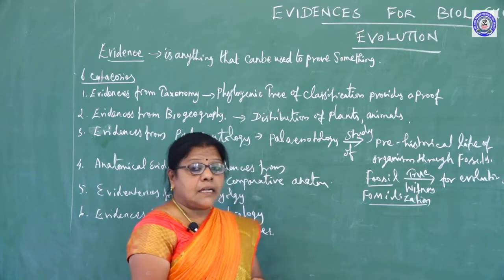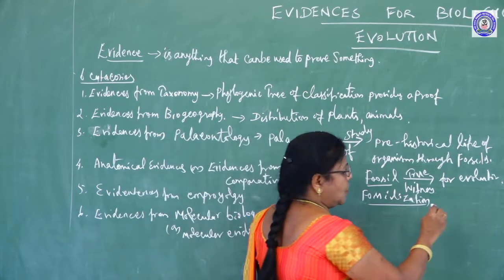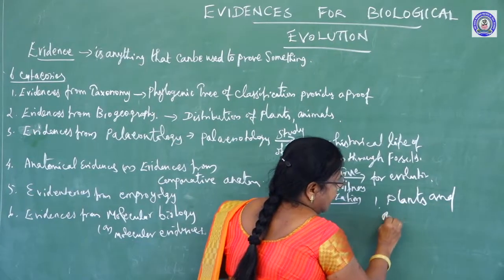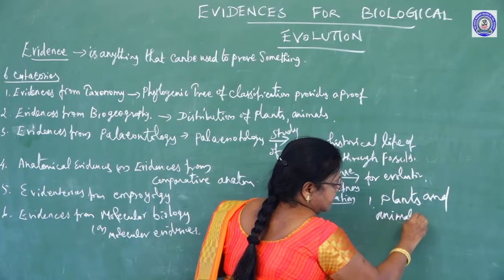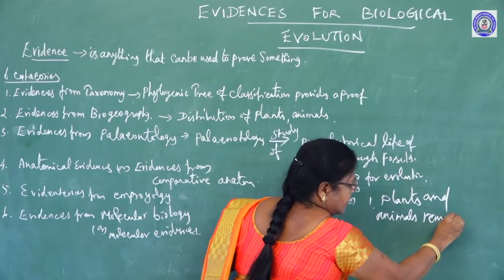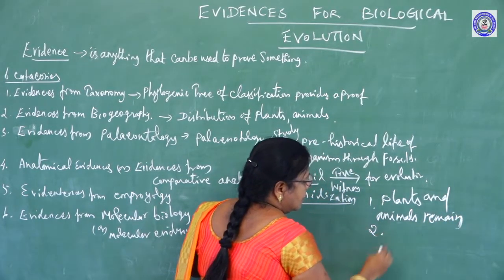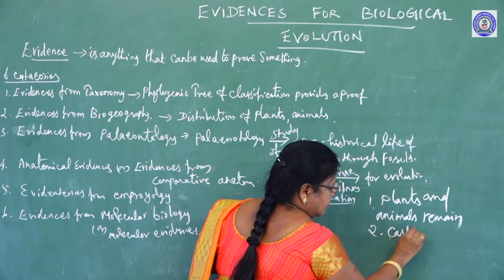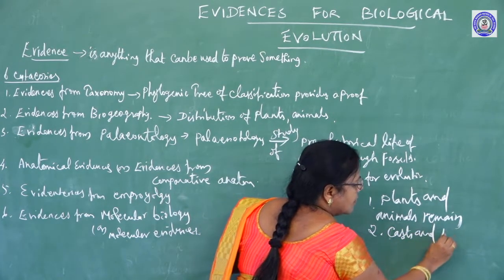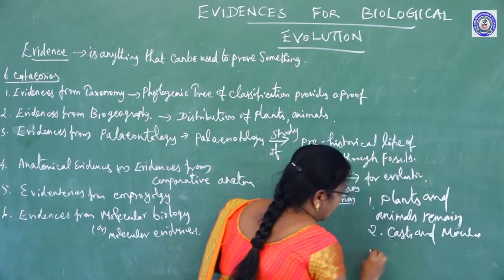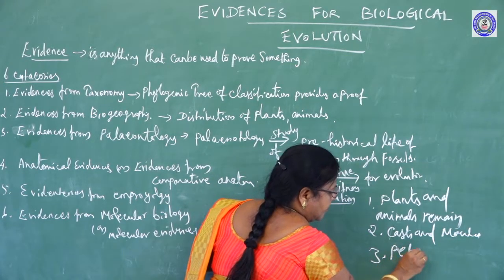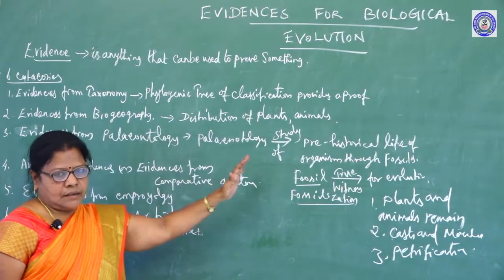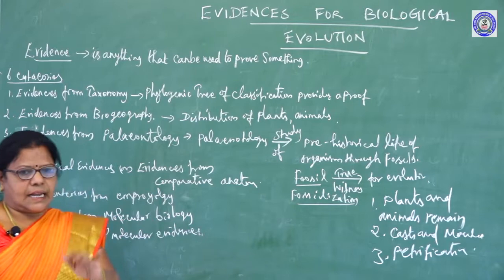These are studied under three categories: first one, plants and animals remains; second one, cast and molds; third one, petrification. About these things, we studied in the previous class.